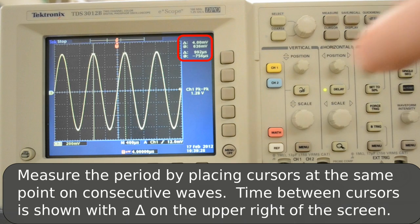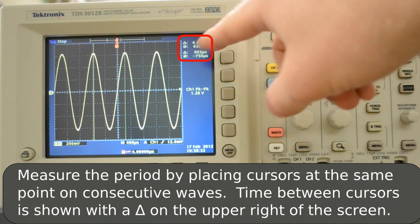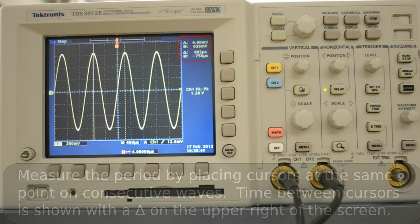Our measurements are indicated over here. You want to look at the delta, which is the change. There's 4 millivolt difference in voltage and a 992 microsecond difference in time, which tells us the period of our signal.